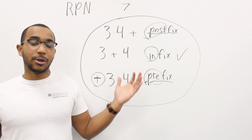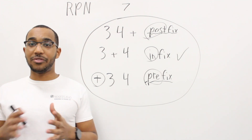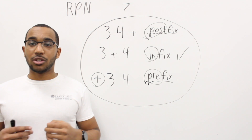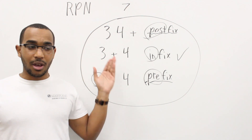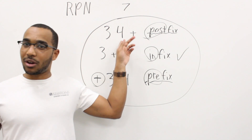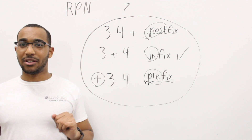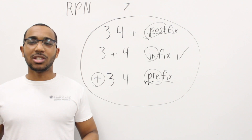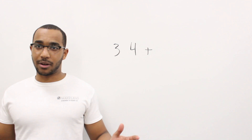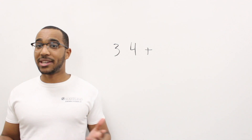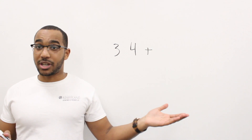What is three plus four? Three plus four is seven. All of these notations are saying the same thing in different expressions of the arithmetic operators. So we need to solve this just like we would solve infix. Let's bring this down and take a look — we're returning back to the basics. This expression is the same thing as three plus four, which is seven.